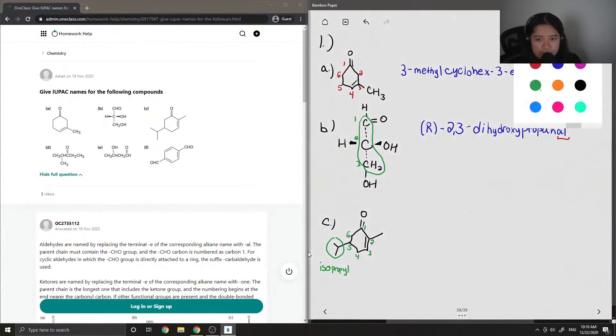Let me write down the parent first. Similar to part A, this is cyclohex. Now I'm going to show where all my side groups are. On carbon-5, we have the isopropyl group. And then on carbon-2, we have a methyl group.